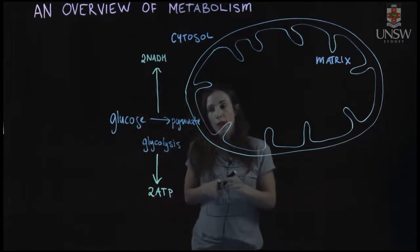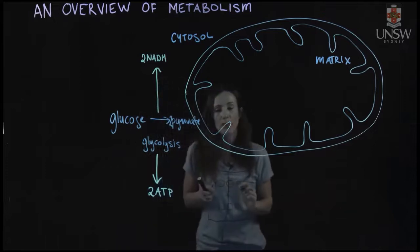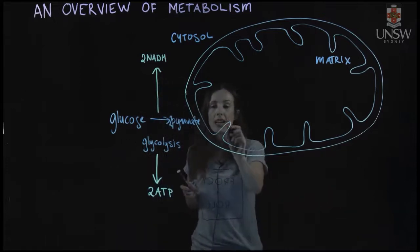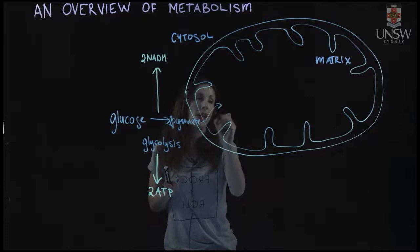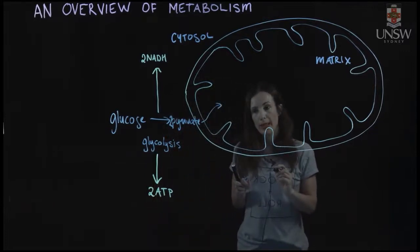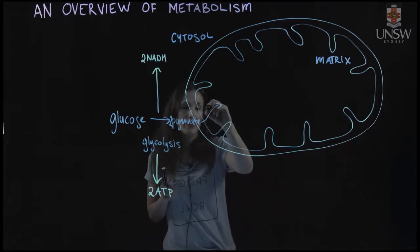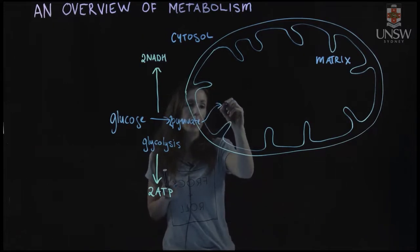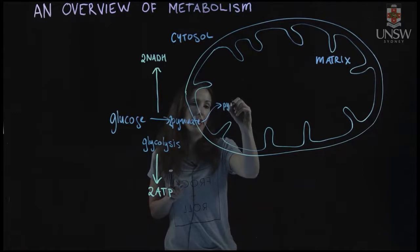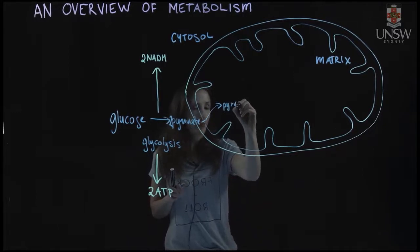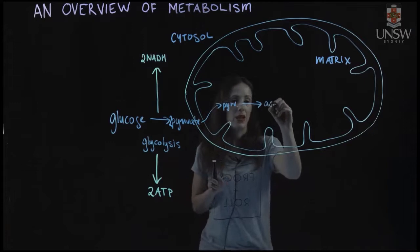Our two pyruvates — because one glucose gives two pyruvates — enter into the matrix. There's a transporter that transports them into the mitochondrial matrix. An enzyme inside the cell takes our pyruvate and converts it to Acetyl-CoA.